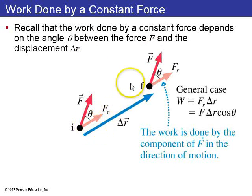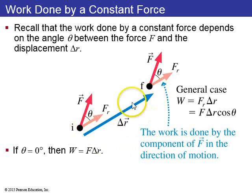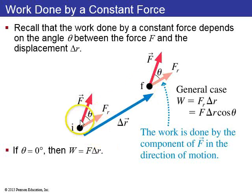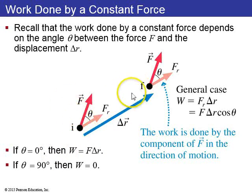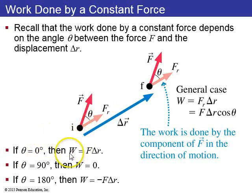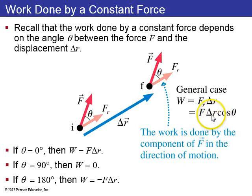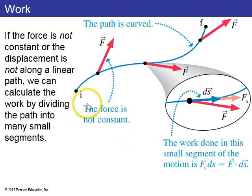When computing work done by a constant force, you look at the path the particle goes on — delta r — and the work done depends on the angle between the path and the force. If theta equals zero, work equals force times distance. If theta equals 90 degrees, the force is perpendicular and does zero work. If the force is opposite to the direction of motion, the work done is negative force times distance.